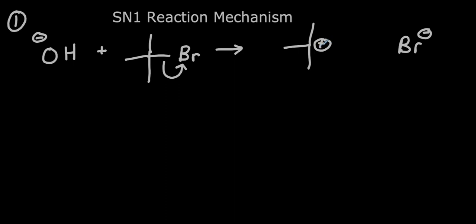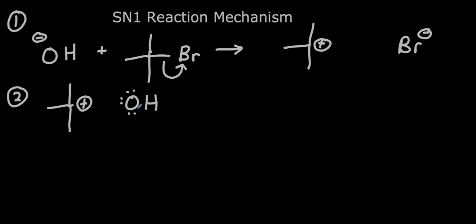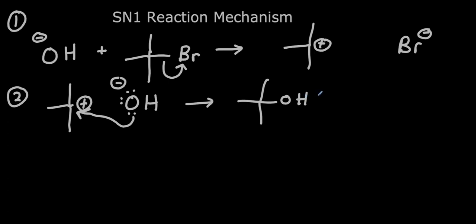As you might imagine, this carbocation is not a stable molecule — it's going to be very reactive because we've got charge on a carbon, and it's going to react with something with a negative charge. We can see we have something with a negative charge sitting right there in the reaction mixture. So in the second step, we're going to have our carbocation react with our nucleophile, the hydroxide ion. One of its lone pairs is going to reach out and form a bond with that carbon atom, giving us our product, t-butyl alcohol.